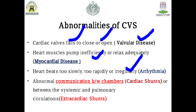If the heart beats too slowly or too rapidly, we call this arrhythmia. Arrhythmia may arise from other complications of the heart, such as myocardial diseases, valvular diseases, cardiac shunts, or any other stress conditions. Abnormal communication between chambers is referred to as cardiac shunts, or between the systemic and pulmonary circulations as extra-cardiac shunts. There are four chambers of the heart, and if there is abnormal communication between these chambers or abnormality in the septa separating each chamber, we refer to these as shunts.